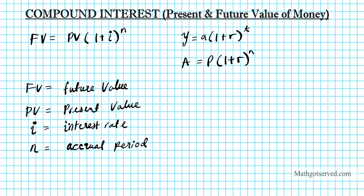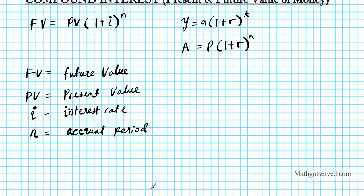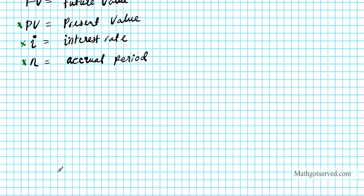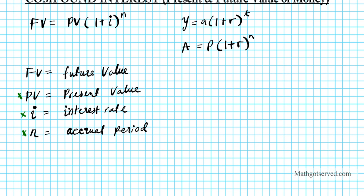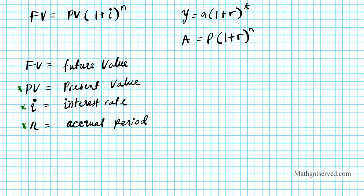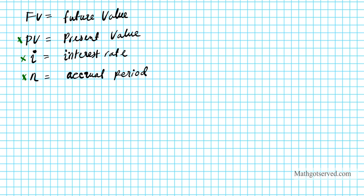What I'm going to do is derive the formula for finding the present value, the interest rate, and the accrual period. All we are doing is applying the properties of algebra to the original formula, so that we can have explicit formulas for computing the present value, interest rate, and accrual period. So let's start with the present value formula.